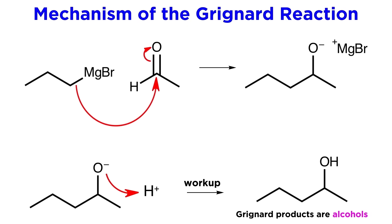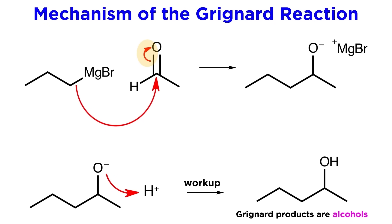We also learned about Grignard reagents, and these act similarly to hydride in that they can attack a carbonyl carbon, but instead of hydride it is essentially an alkyl anion attacking. The pi electrons in the carbonyl are pushed up onto the oxygen, which coordinates with MgBr, and this neutralizes the oxygen. Then hydrolysis occurs upon aqueous acidic workup to give the alcohol. So this is similar to reduction by hydride, but instead of a new carbon-hydrogen bond, it is a new carbon-carbon bond that is produced.